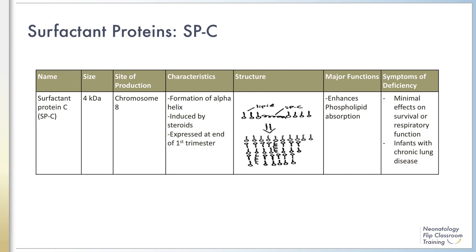Surfactant protein C is the smallest surfactant protein at only 4 kilodaltons. It is hydrophobic and forms an alpha helix — a spring-shaped structure — embedded in the phospholipid film. This allows the protein to serve a critical role in transporting phospholipids to the air-liquid interface and contributing to the stability of the phospholipid film during compression.